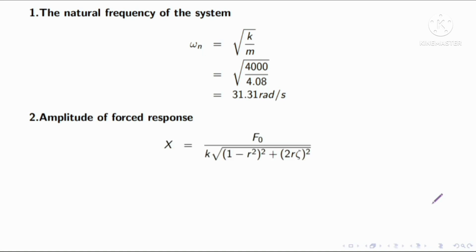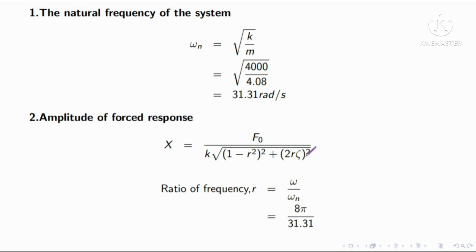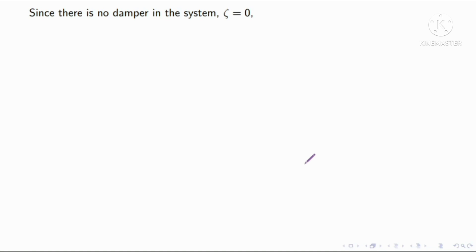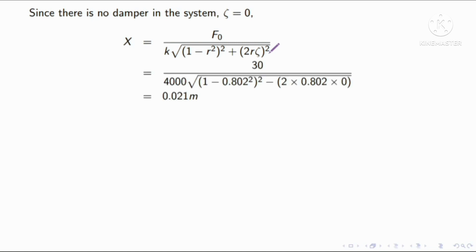Amplitude of forced response: x is equal to f0 divided by k, into the square root of 1 minus r squared, all squared, plus 2r zeta squared. Finding the frequency ratio r and substituting all values gives 0.021 meter.